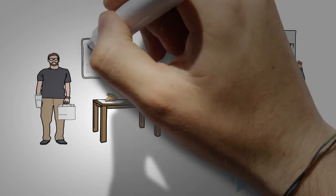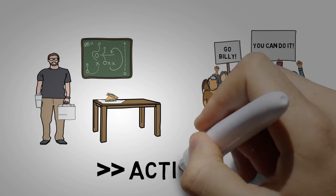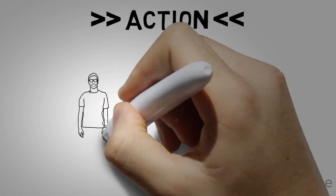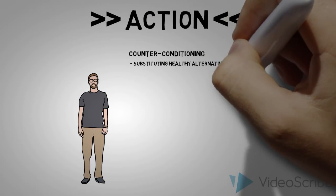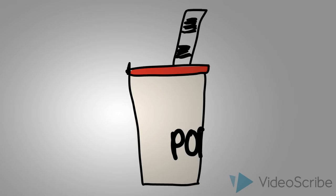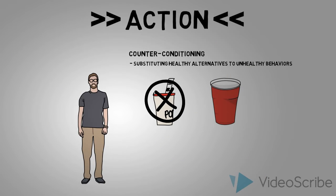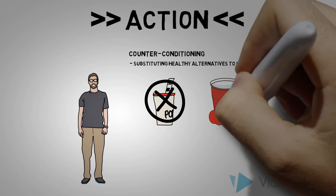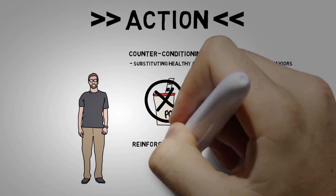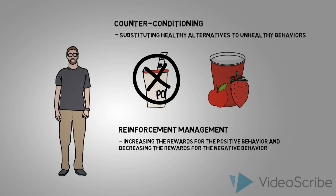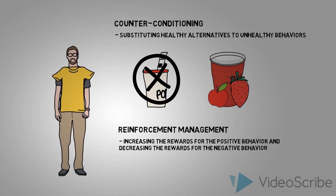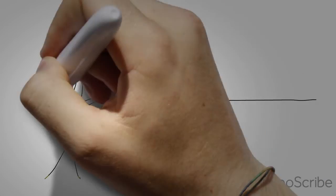This is where the behavior is changed, but it takes a lot of effort to make the new behavior stick. Some of the processes or strategies used at this stage can be counter-conditioning and reinforcement management. Counter-conditioning refers to substituting healthy alternatives to unhealthy behaviors. Instead of having a milkshake like Billy used to do often, he has begun having a smoothie made with fresh fruits. Reinforcement management is increasing the rewards for the positive behavior and decreasing the rewards for the negative behavior. Billy has been noticing his old clothes are fitting better again and no longer sees the need for fast food.